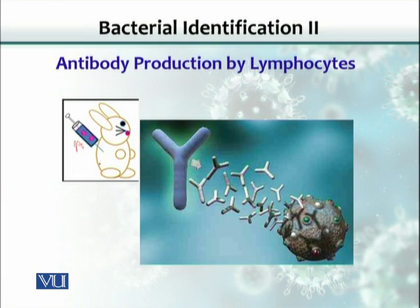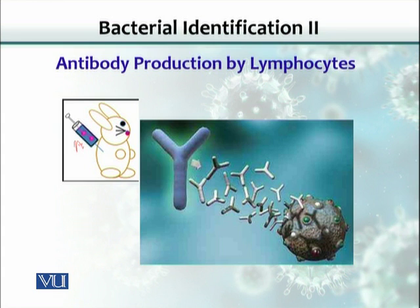If we inject this bacterium into the rabbit, wait one or two weeks, take the blood, and collect serum, that blood would contain antibodies against the organism we injected. You may have noticed when you go for blood transfusion — they take your blood and cross-match the recipient and donor blood. That reaction is typically an antigen-antibody interaction.